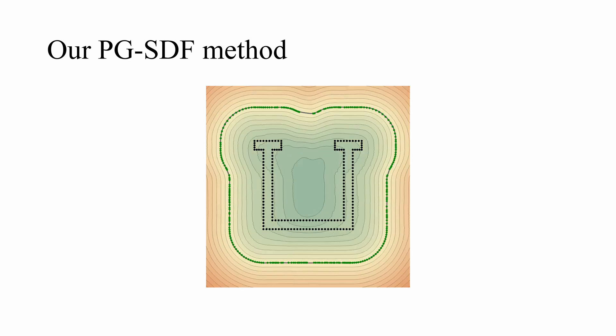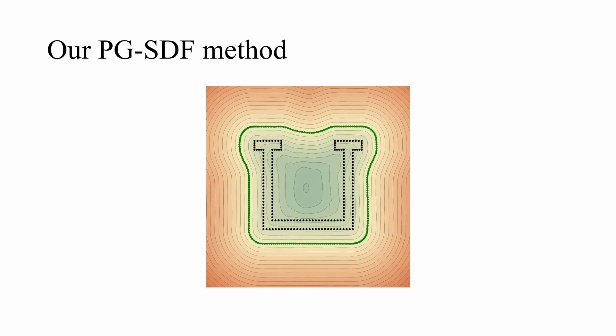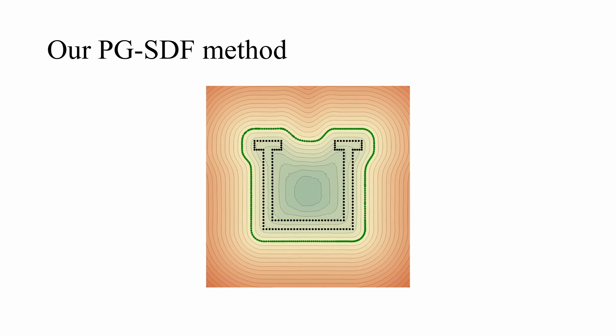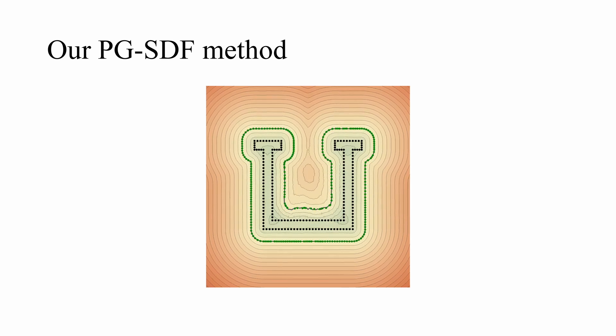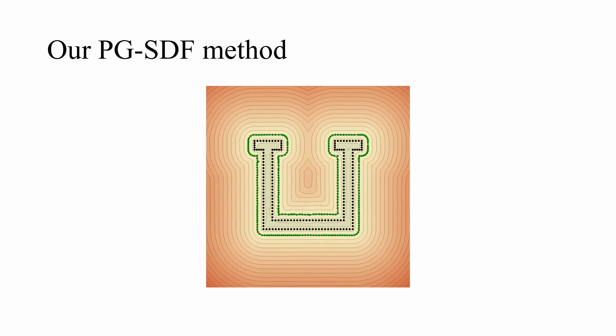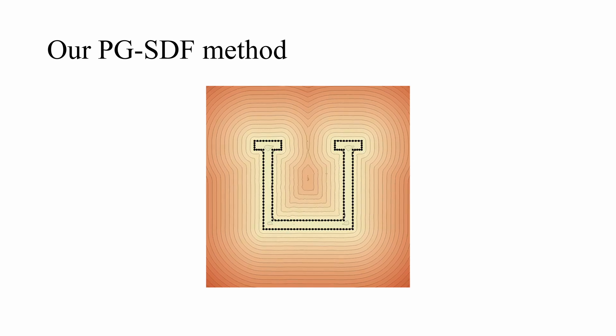Thus, our method repeatedly alternates between moving the guiding points towards the input points and optimizing the network to reconstruct the newly moved guiding points. As the guiding points are moved a short distance each time, we avoid the issue of geometry alignment and SDF optimization is easy. Instead, the difficulty is in determining how to move the guiding points.